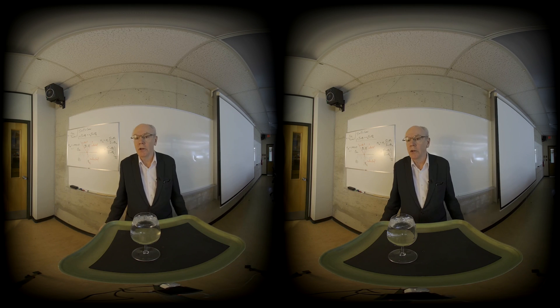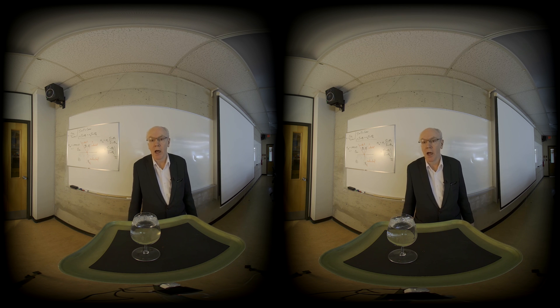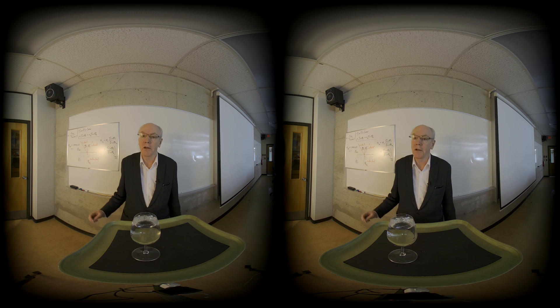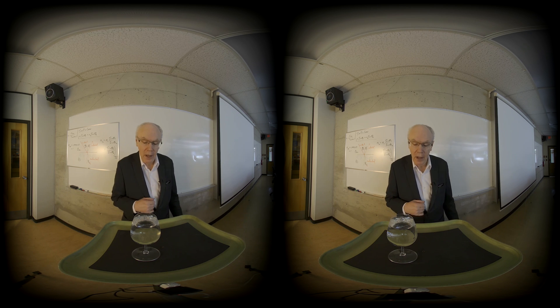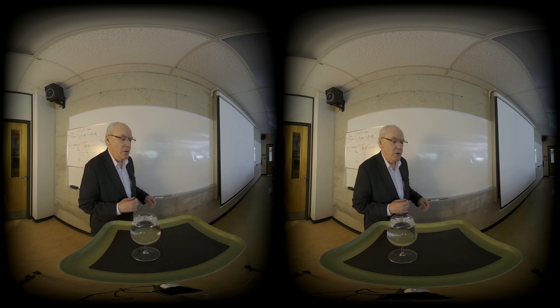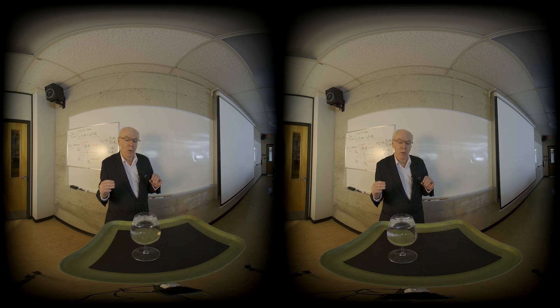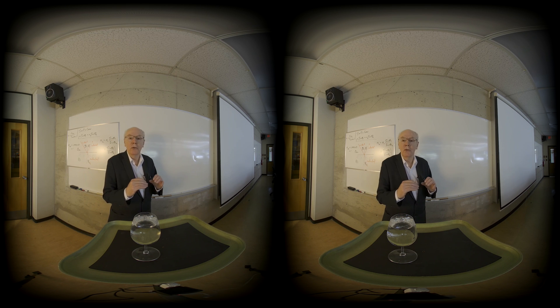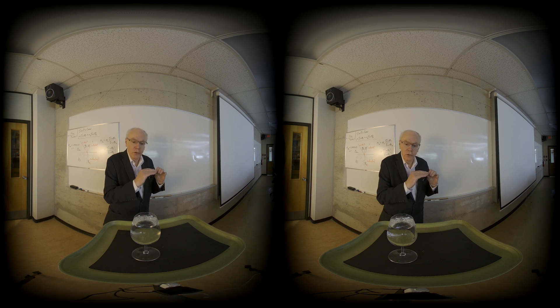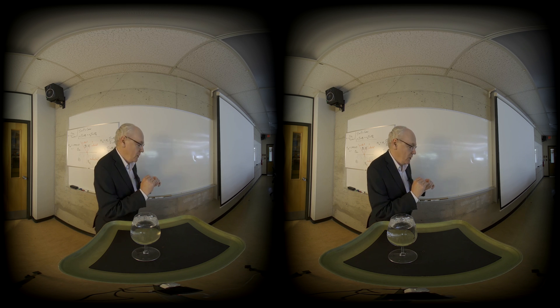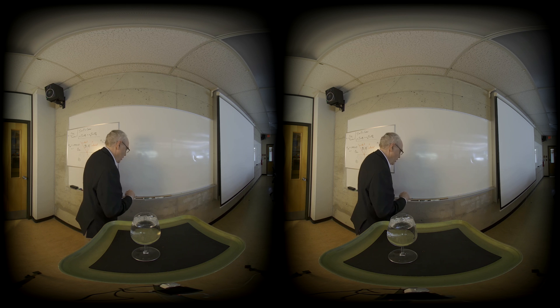A side effect of total internal reflection is something called an effervescent wave. This is a wave that, while there's total internal reflection, travels along the surface in addition to the reflection.